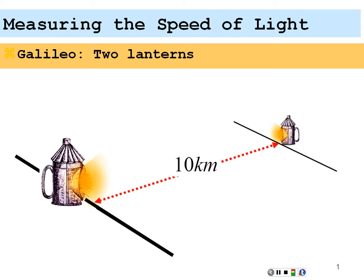So basically, first light is revealed, the second light comes back, you stop the clock, and you're measuring how fast the signal passes there and back again — 20 kilometers. There is reaction time involved here, so you would have to account for the human reaction time, measure that somehow, subtract it, and make that calculation.